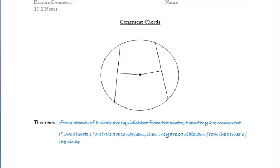If you notice here while reading these two theorems, they are pretty much opposites of each other. The first theorem and second theorem are converses of each other. The first theorem says if two chords of a circle are equidistant from the center, then they are congruent.